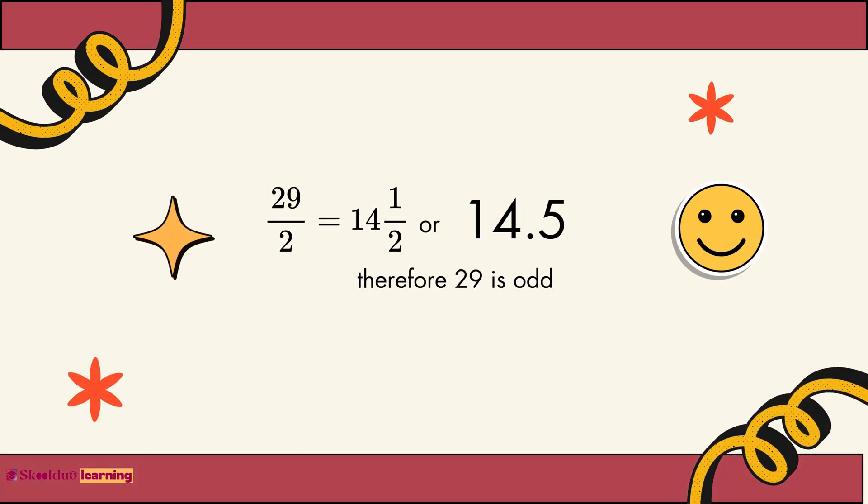29 divided by 2, which is equals to 14 and half, or 14.5, therefore 29 is an odd number.